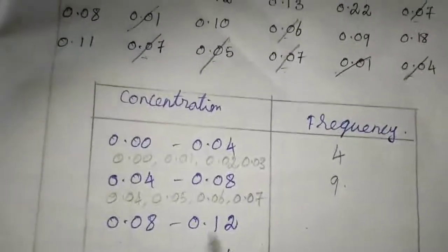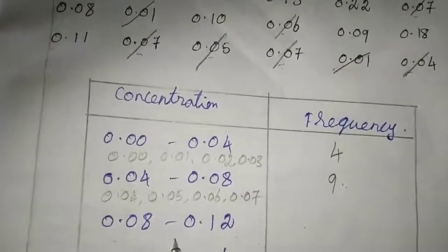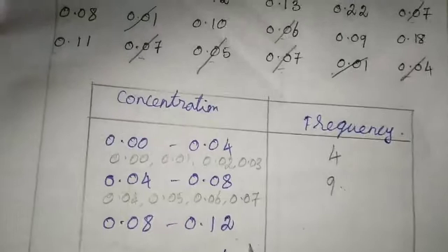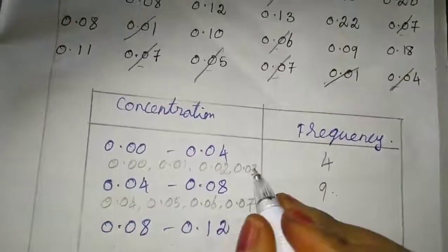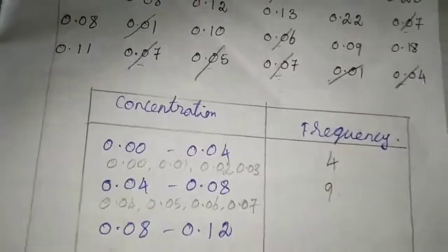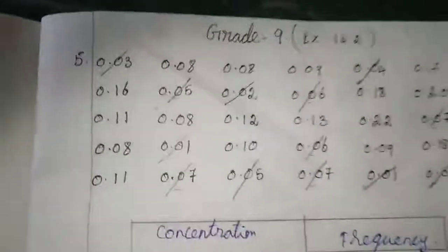Next one is 0.08 to 0.12, so 0.08, 0.09, 0.10, 0.11. Now if I am doing the reference, I wrote for these two steps, knowing these steps, so I am going to directly refer the data.